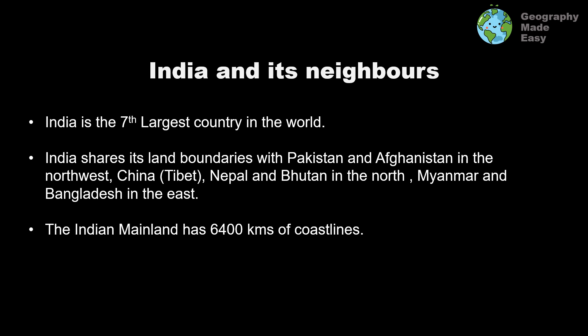India and its neighboring countries: India is the 7th largest country in the world — this can come as a trivia question. It shares its boundaries with Pakistan and Afghanistan in the northwest, China or Tibet in the north, and Nepal and Bhutan also in the north. Nepal and Bhutan are two landlocked countries lying between China and India. Myanmar and Bangladesh are in the east. India holds a very important geo-strategic location.